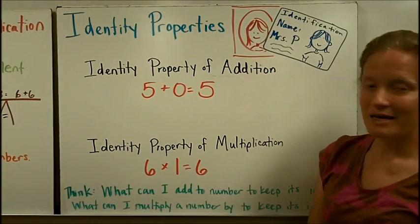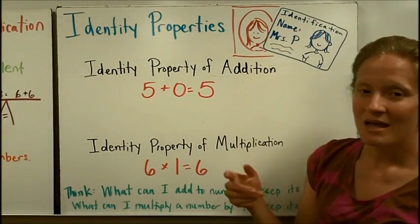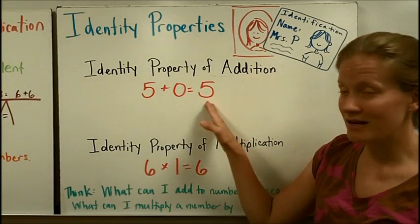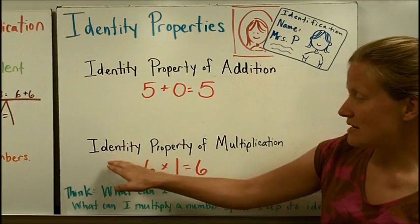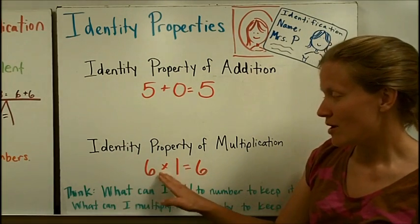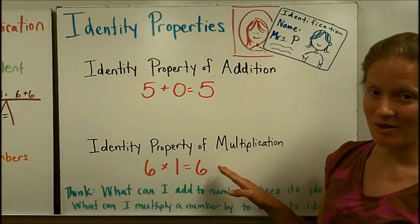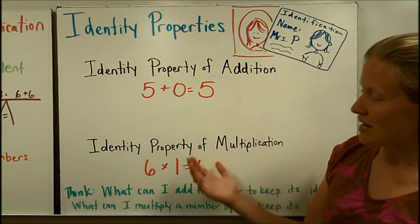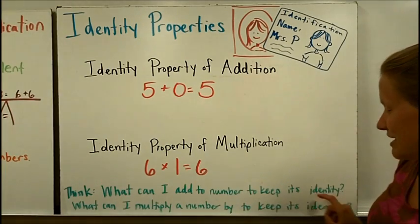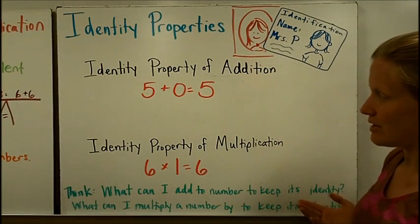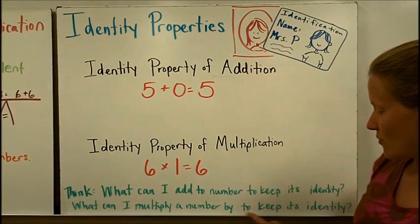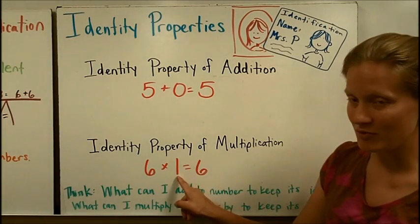First, the identity property. The identity property of addition says that you can take any number and add 0 to it and get the same number. The identity property of multiplication says that you can take any number, multiply it by 1, and get the same number. Think about it this way: what can I add to a number to keep its identity — to keep it the same — for addition? Or for multiplication, what can I multiply a number by to keep its identity? That would be a 1.